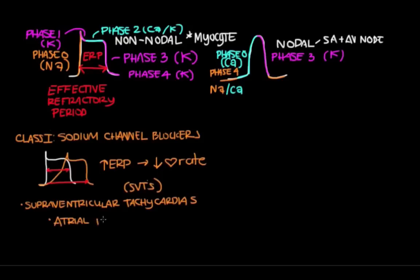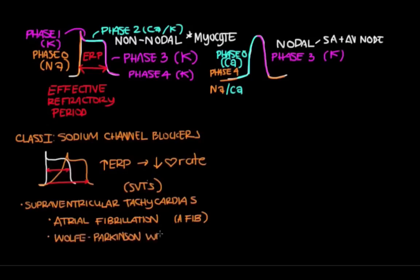Examples of SVTs include atrial fibrillation, also known as AFib, which is a condition where the top chambers of the heart are spasming. You can also use a sodium channel blocker to treat an SVT caused by Wolff-Parkinson-White syndrome, which causes a certain type of reentrant tachycardia.